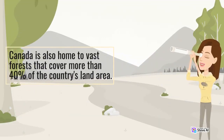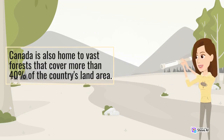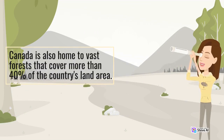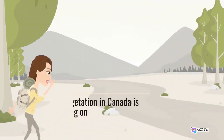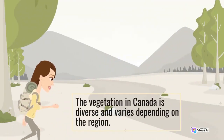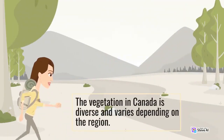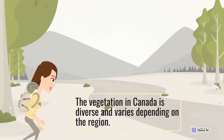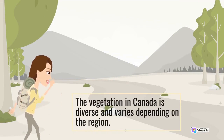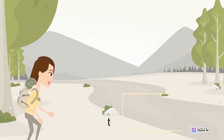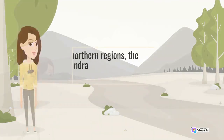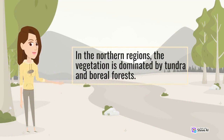Canada is also home to vast forests that cover more than 40% of the country's land area. The vegetation in Canada is diverse and varies depending on the region. In the northern regions, the vegetation is dominated by tundra and boreal forests.